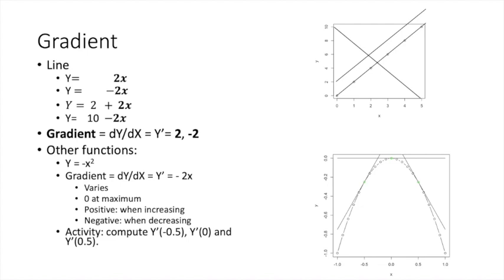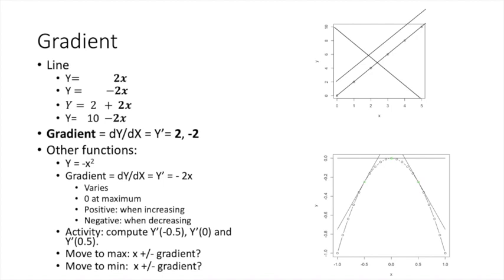Now that you are at x equals 0.5, to get to the maximum you need to move to the left. So again you compute the gradient, which is now negative 1. Adding this gradient to the present value of x, which is positive 0.5, gives a new value of x equal to negative 0.5. So again you moved back towards the maximum value, but jumped over it. We can see that adding the gradient moves us towards the maximum value, but to land at the maximum we may have to make our jumps smaller.